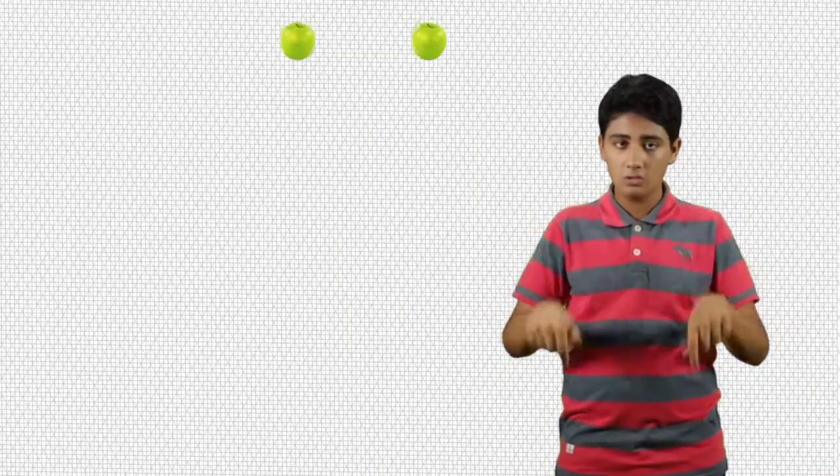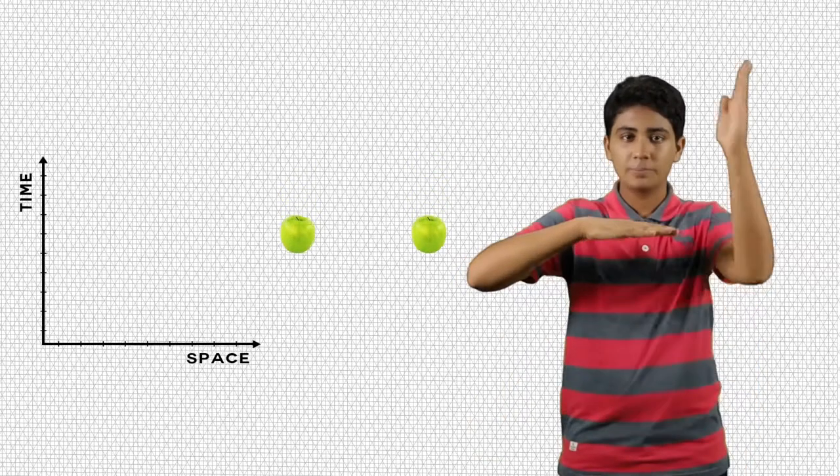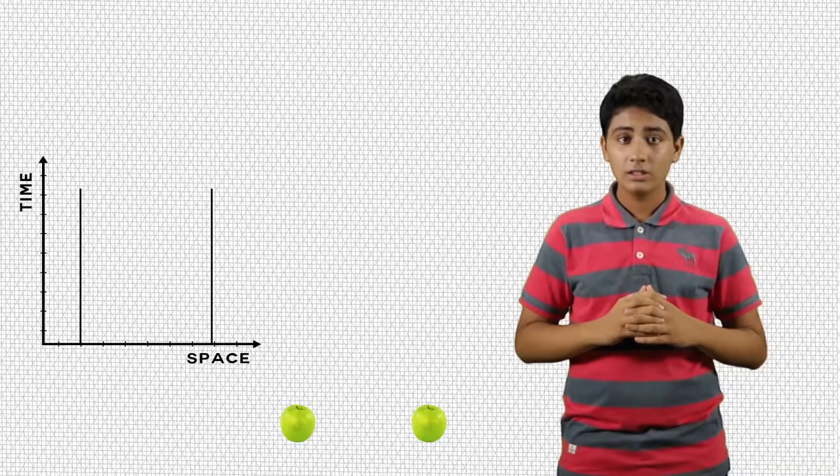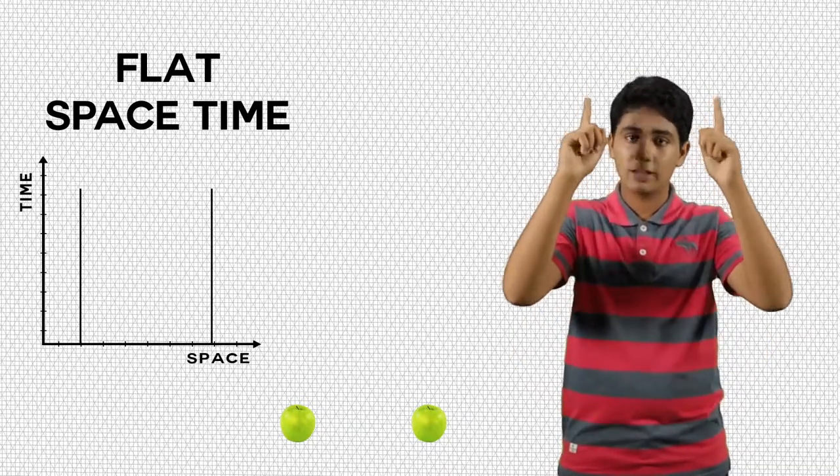Take two apples which are moving down parallel to each other. If we plot their position with respect to time, we'll get two parallel trajectories which never meet. This is called a flat space time as two parallel lines stay parallel.